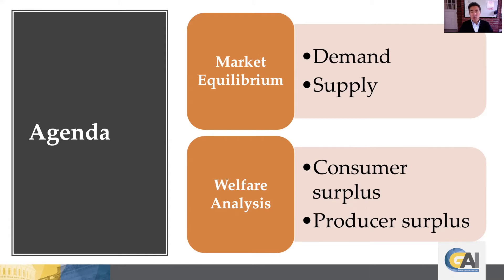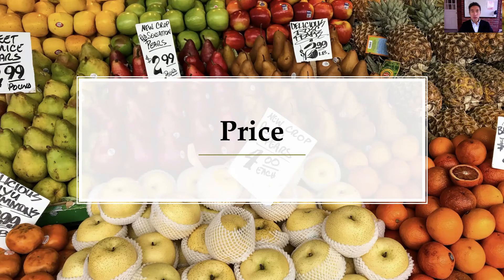After we set up the equilibrium, we're then going to transition over to talk about welfare — in this context we mean how well the participants in the market, in this case consumers and producers, are doing. We capture that idea for consumers through the consumer surplus and for producers with the idea of producer surplus. A central part of the market discussion is really the determination of price and ultimately the role that prices play in a market economy.